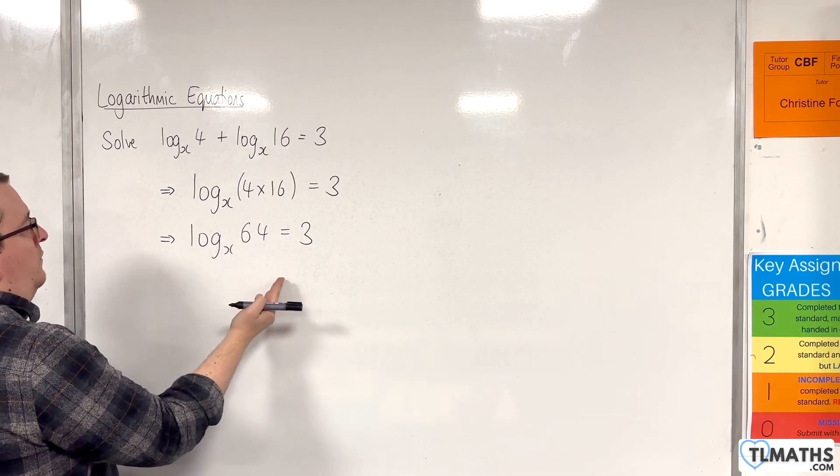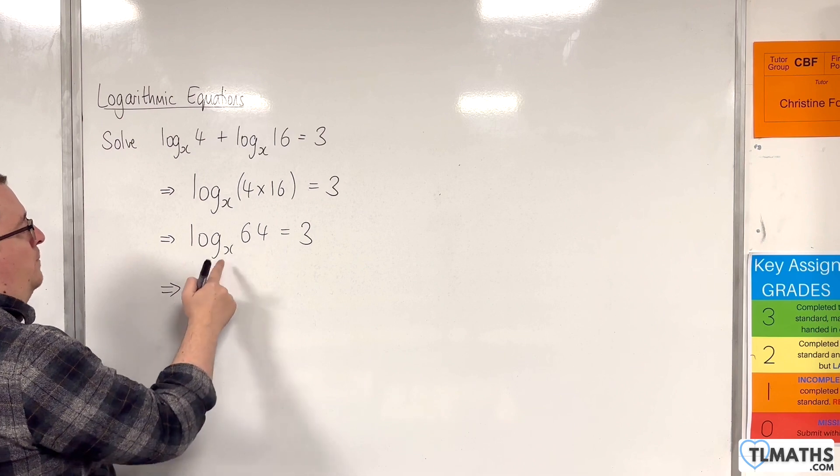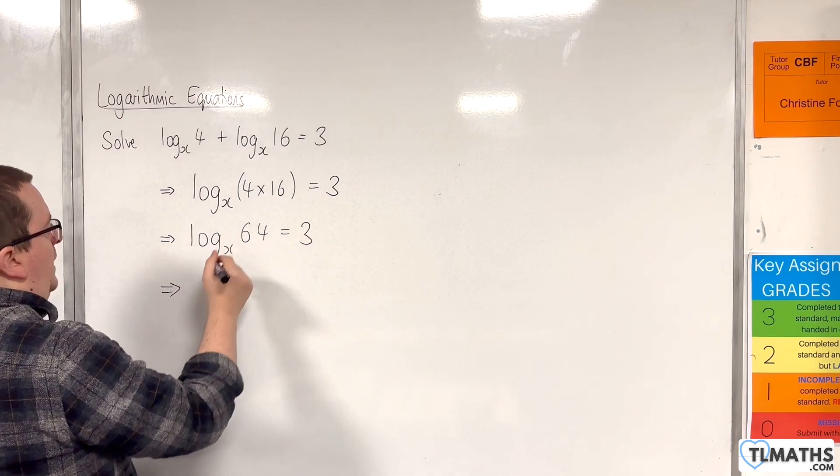Now converting from logarithmic form to exponential form, x cubed must be equal to 64.